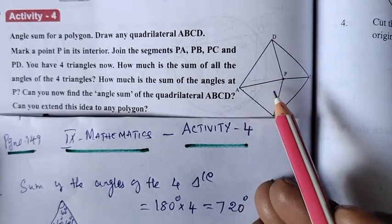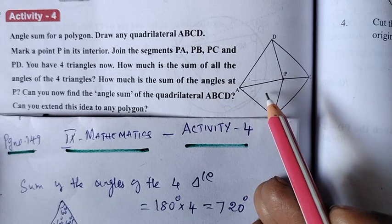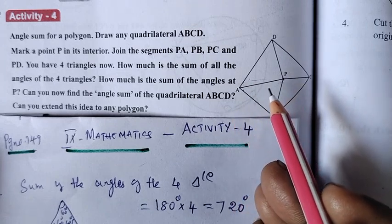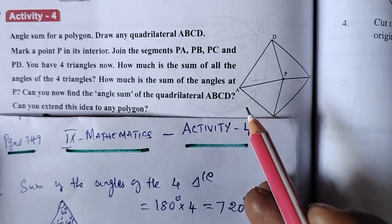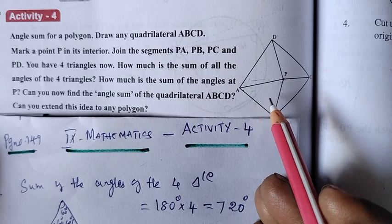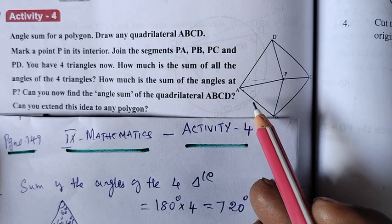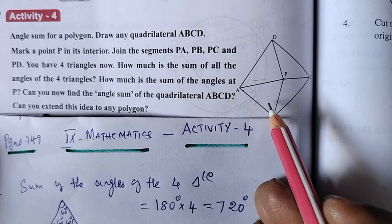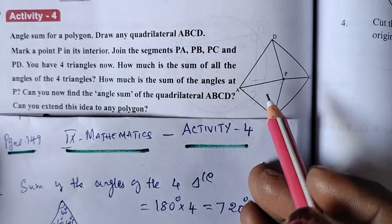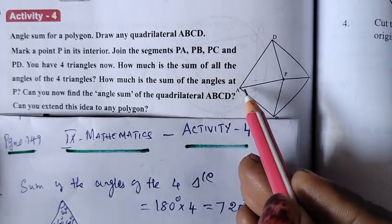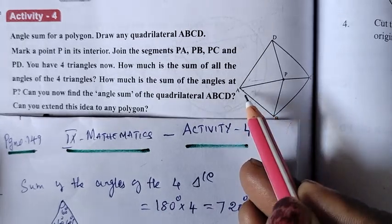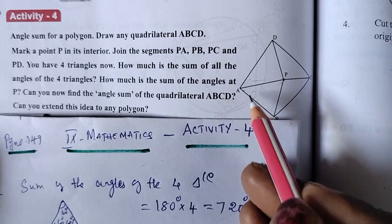How much is the sum of the 4 triangles? How much is the sum of the angles at P? Can you find the angle sum of the quadrilateral ABCD? Can you extend this idea to any polygon?